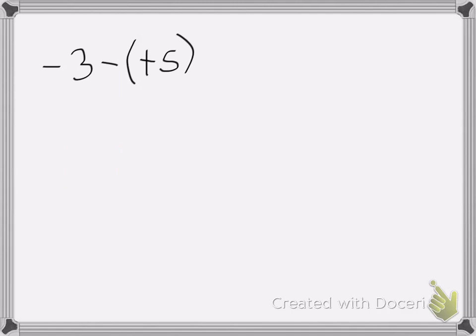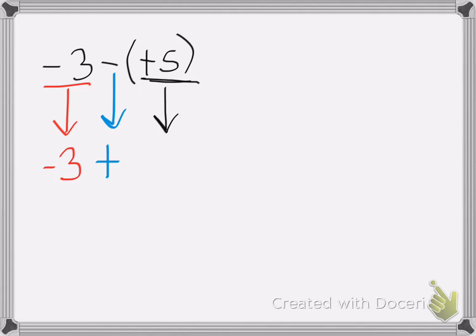Here I have negative 3 minus a positive 5. Again, the negative 3 stays the same — the first number stays the same. My subtraction sign becomes an addition sign, and then I do the opposite of my last number. Here I have a positive 5, so I switch it to the opposite, which is a negative 5. So I'm adding two negative numbers, which means my answer will be negative. Negative 3 plus a negative 5 equals negative 8. Good luck with your homework.